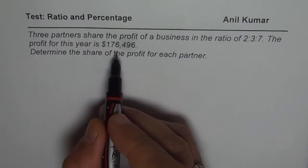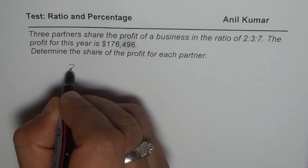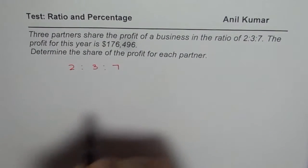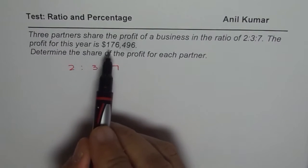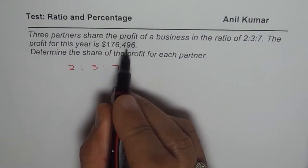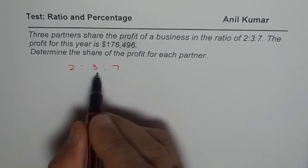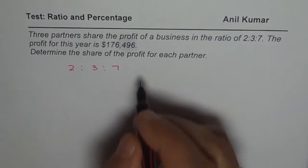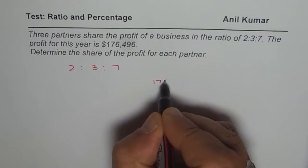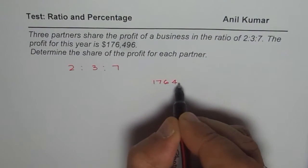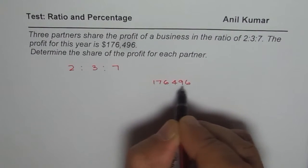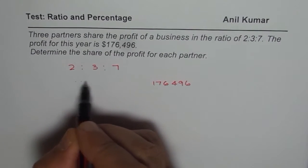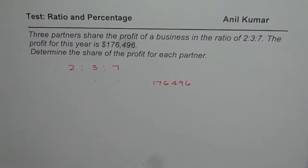So, what we have here is that there are three partners and the ratio is 2 to 3 to 7. Now, if we have a profit of $176,496, then how much will each person get? That is the question. Now we have a profit which is $176,496 in dollars. How will you get the share of each person?